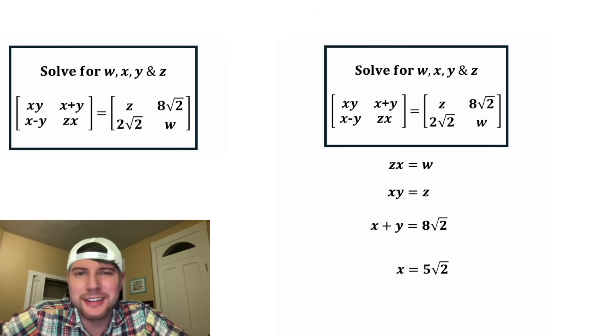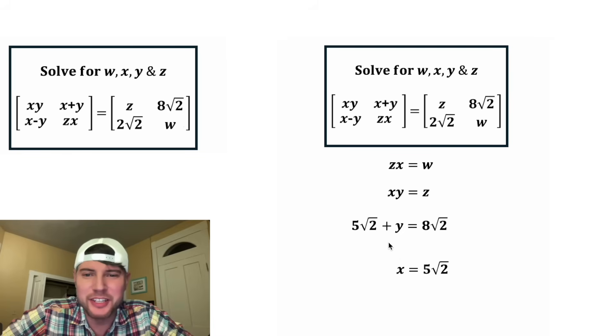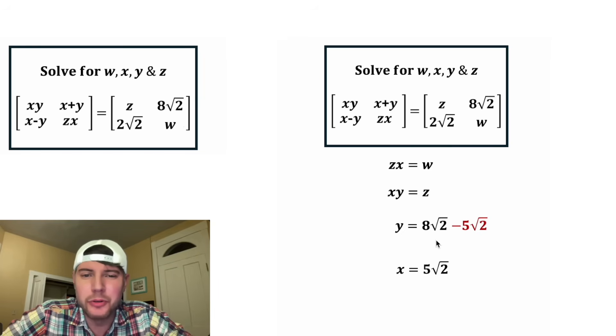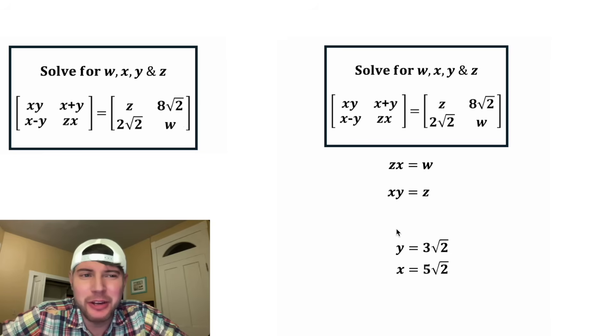And now we're ready to solve for y. In the place of this x, we can substitute 5 root 2. To get the y by itself on this side, we can subtract 5 root 2 from both sides. On the left-hand side, these will cancel each other out. And on the right-hand side, 8 root 2 minus 5 root 2 equals 3 root 2.